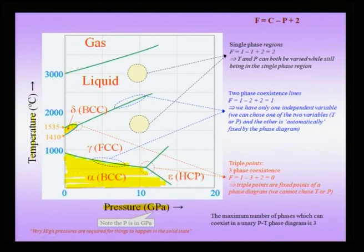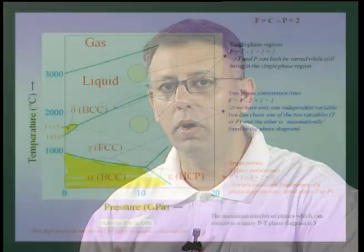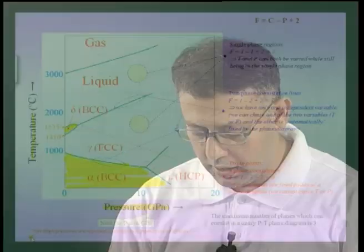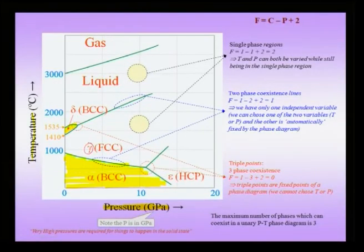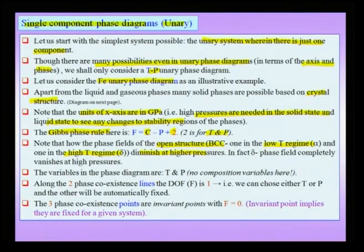This is not surprising, because BCC is an open form of packing and therefore the packing fraction is not good. We would expect that the close-packed form — labeled gamma in the case of iron — its phase field will expand. You can see that the phase field lines are going upward, so there is an expansion of the phase field for the gamma form of iron. Along the two-phase coexistence lines the degree of freedom is 1, and wherever three phases coexist the degree of freedom is 0.